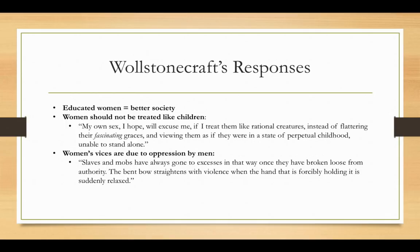Wollstonecraft then addresses the idea that women are inherently sinful, excessive, or prone to addictions. She doesn't dispute that this might be true, but she says if those things are true, it's men's fault. She writes: "Slaves and mobs have always gone to excesses in that way once they have broken loose from authority. The bent bow straightens with violence when the hand that is forcibly holding it is suddenly relaxed." She argues that if women are behaving badly, it's because they've been kept as slaves for so long that the minute they get a taste of freedom, they act a little wild — and this is simply part of human nature.